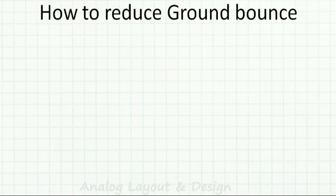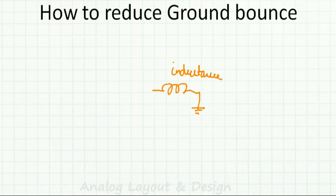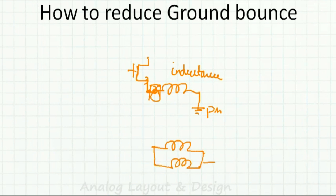To reduce ground bounce, the root cause is the parasitic inductance between the on-chip ground and the package pin — the bond wire. The best way to reduce this inductance is to use multiple bond wires in parallel instead of a single bond wire, which reduces the effective inductance. This limits the voltage spike produced by current transitions and reduces ground bounce.